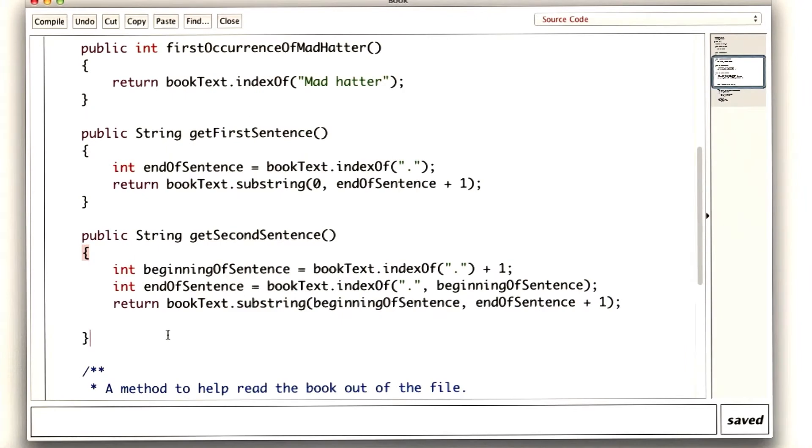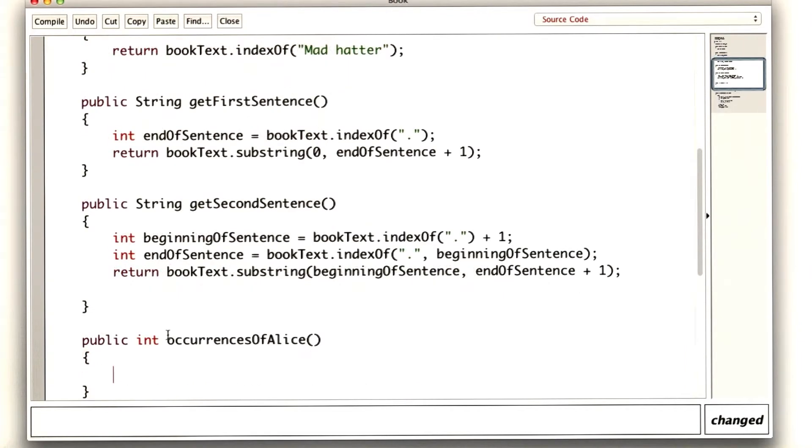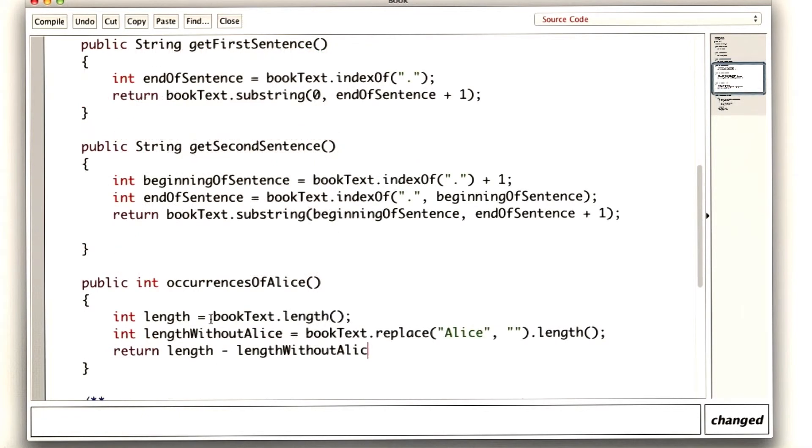So here again is our book class with our new method, occurrences of Alice. First we'll calculate the original length, and then the length after we remove all occurrences of Alice by replacing Alice with an empty string. Then we return the difference between the two, all divided by 5.